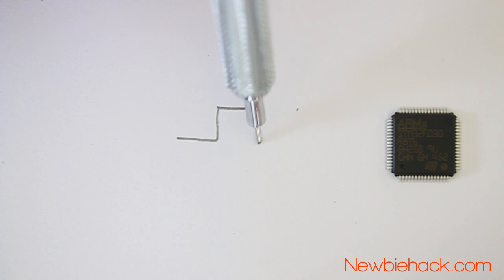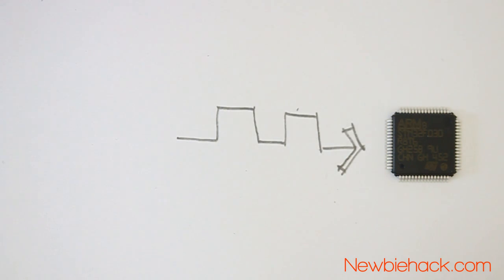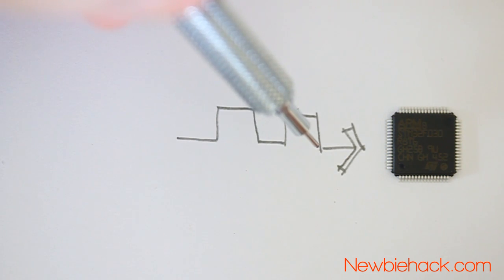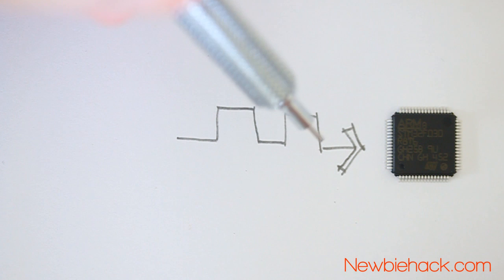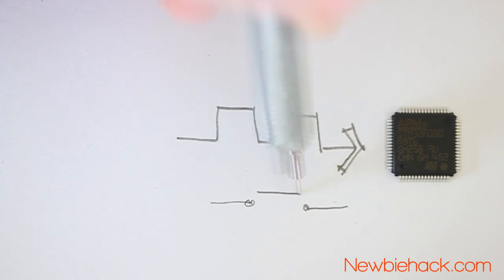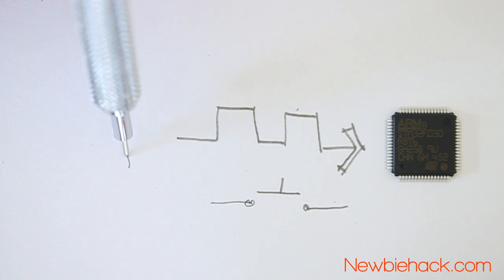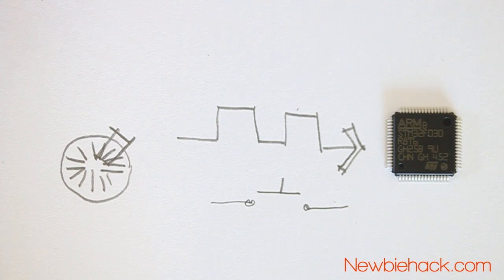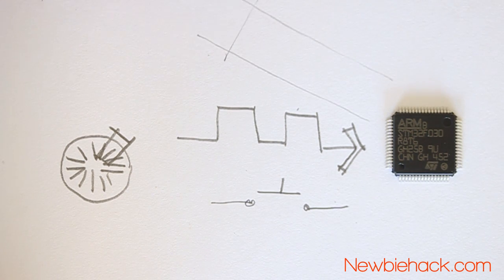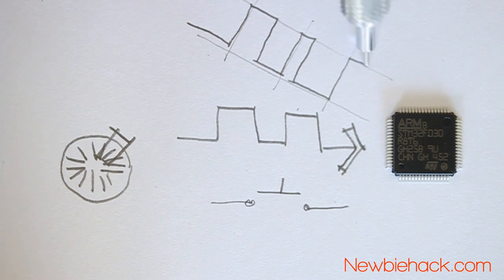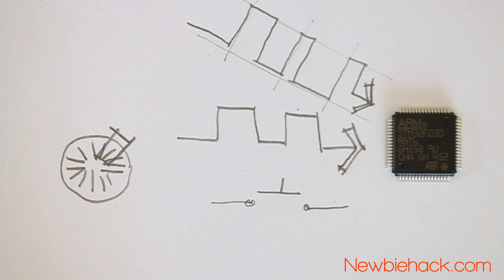Microcontrollers can also receive digital input not related to serial communication, such as button presses, encoder pulses, PWM signals, and any other type of on-and-off signal coming into the microcontroller.